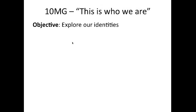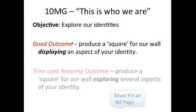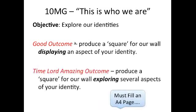So how are we going to do this? I want each of you to produce an outcome which is going to go on to the orange wall, and they will look a little bit like this. A good outcome will produce a little square for our wall which displays an aspect of your identity, and a really amazing Time Lord sensational outcome would produce a square which explores several different aspects of your identity.